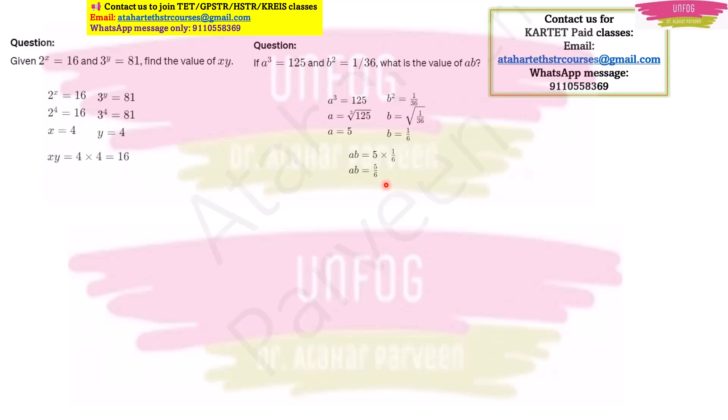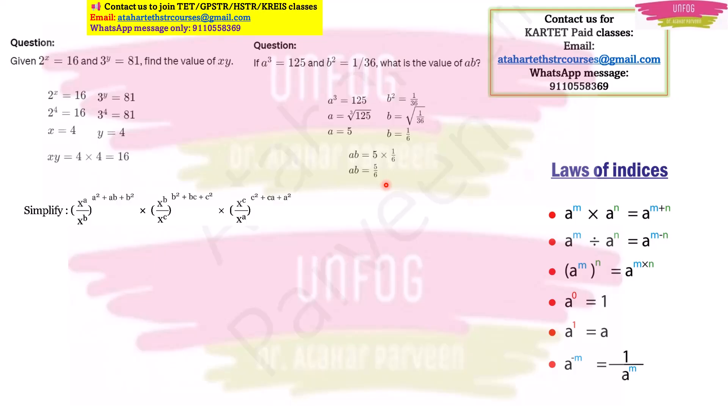Let me give you another expected question. Here you have to simplify this expression. Before going to solve this expression, I want to give you these laws of indices. I told you in the first expected problem about this: A to the power M into A to the power N is equal to A to the power M plus N. Like that only, if you have A to the power M divided by A to the power N, it will be A to the power M minus N. If you have A to the power M whole to the power N, then you can just multiply the powers. If you have A to the power 0, then your answer will be 1. If you have A to the power 1, then your answer will be A only. And if you have a negative power, then that base will become the denominator if you remove the negative sign from the power. That is A to the power minus M will become 1 by A to the power M.